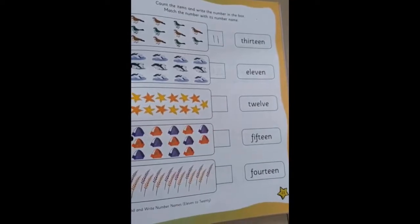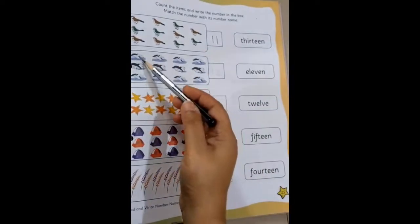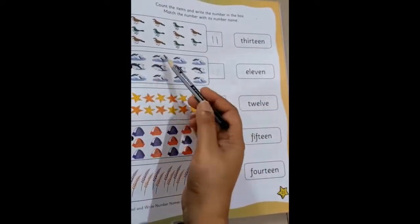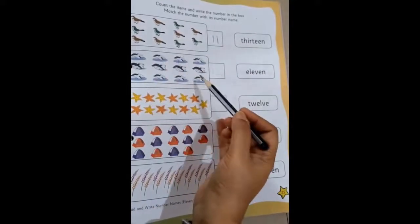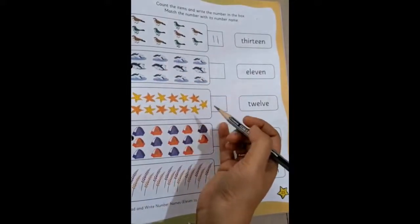Moving on to the next one. How many dolphins are there? 1, 2, 3, 4, 5, 6, 7, 8, 9, 10, 11, 12. So we write how many dolphins? 12.